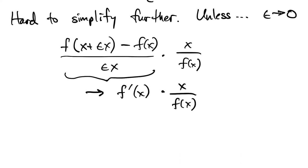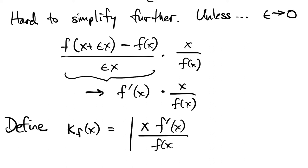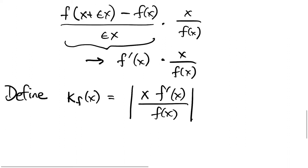So this gives us a nice compact expression for the ratio of the change in the result to the change in the data, when those changes are measured in relative terms. So we're going to give a name to this quantity, we'll use the Greek letter kappa, a subscript of f to say which problem we're talking about. Put everything in absolute values, and this is known as the relative condition number.